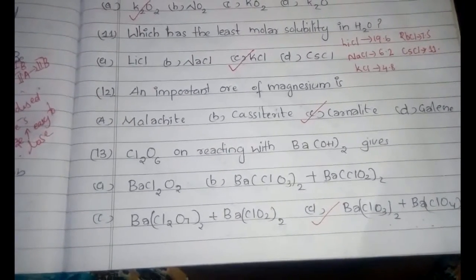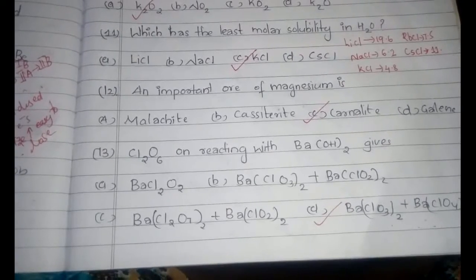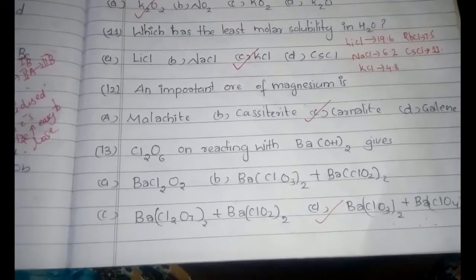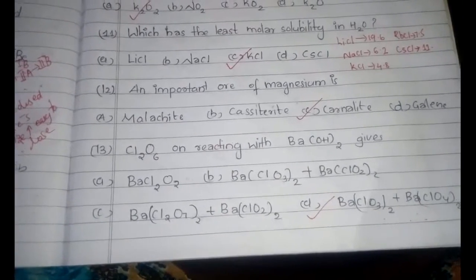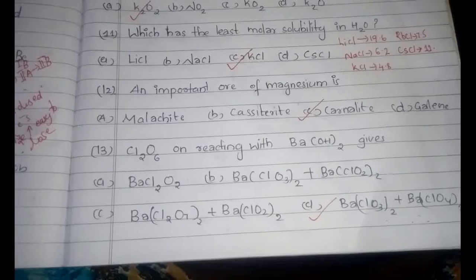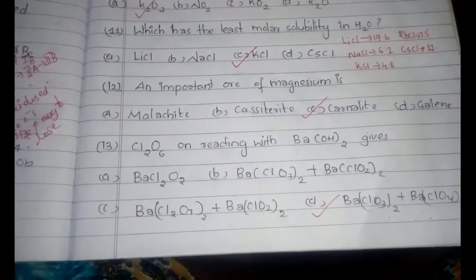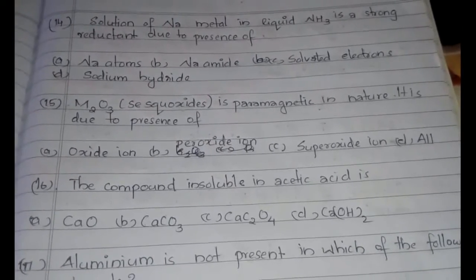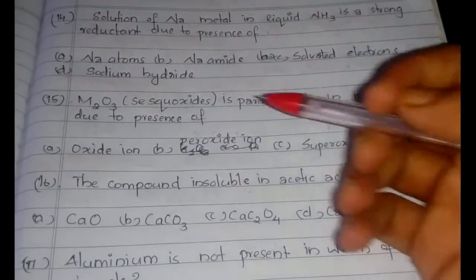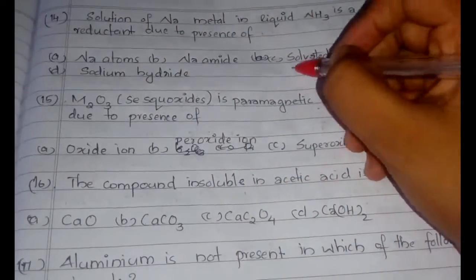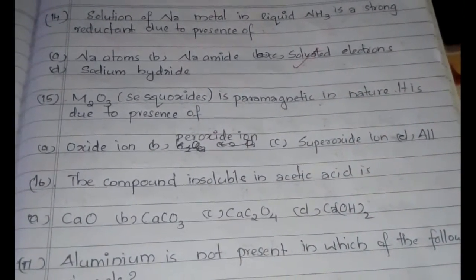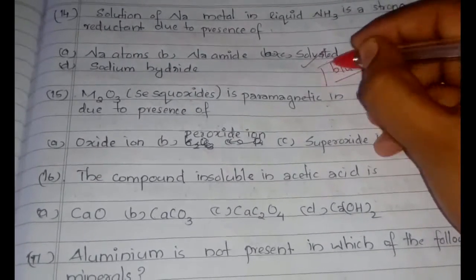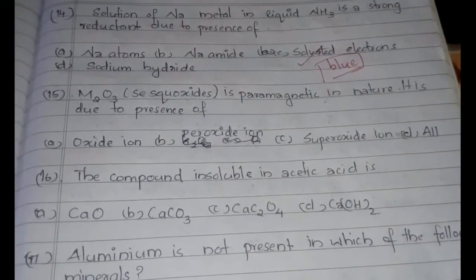If you do the four series we are going to cover in s-block elements, you will be able to answer 99% of the questions from this part. Next question: the solution of Na metal in liquid NH₃ is a strong reductant due to the presence of solvated electrons. Also remember — these solutions have a blue color because of solvated electrons.